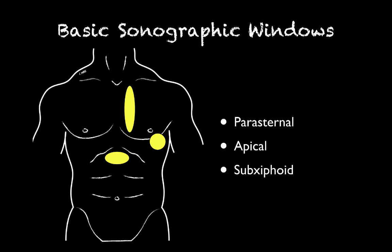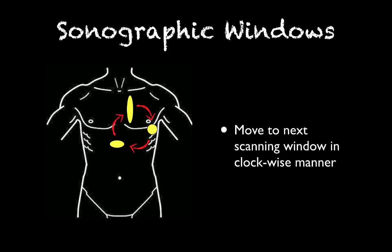We have some basic sonographic windows — parasternal, apical, and subxiphoid. I like to go in a clockwise manner starting at the parasternal, and I like to start in the position of comfort. If the patient is struggling to breathe and sitting up, scan them there. If needed, lay them back or roll them to their left side. I don't spend a lot of time in one spot — I change position to get better images, but I always follow the parasternal, apical, subxiphoid pattern to stay sequential.